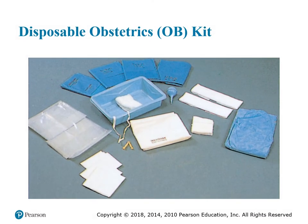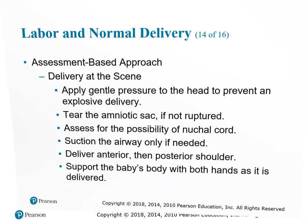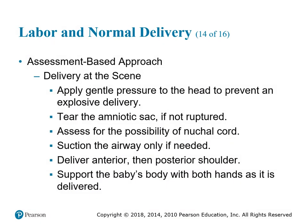A disposable OB/GYN kit contains sterile field sections, four-by-fours, five-by-nines, clamps to clip the umbilical cord, scissors, and drapes. During delivery: apply gentle pressure to the baby's head to prevent an explosive delivery. Tear the amniotic sac if not ruptured. Assess for nuchal cord — the umbilical cord wrapped around the neck — and if found, slowly detach it or loop it around. Suction the airway only if needed. Deliver the anterior then posterior shoulder. Support the baby's body with both hands as it is delivered.